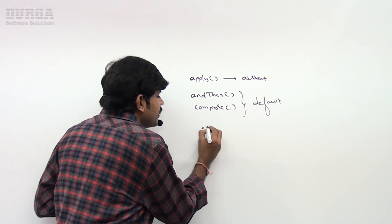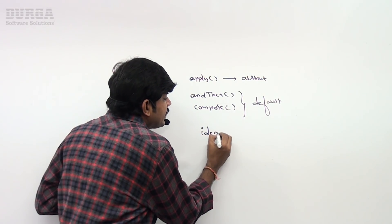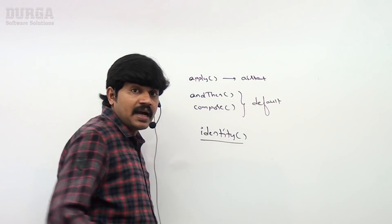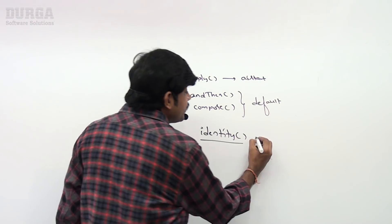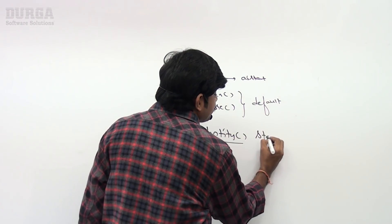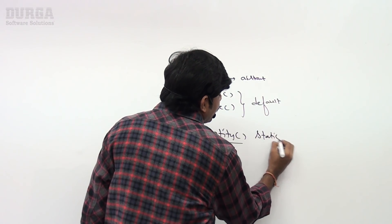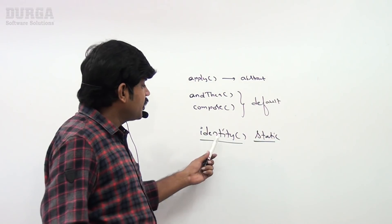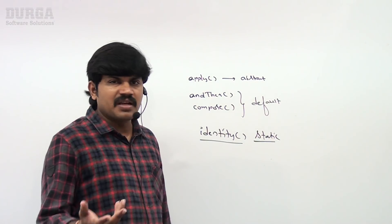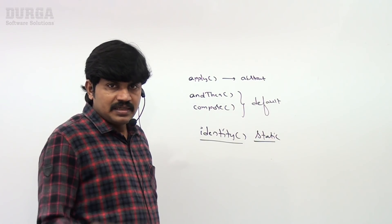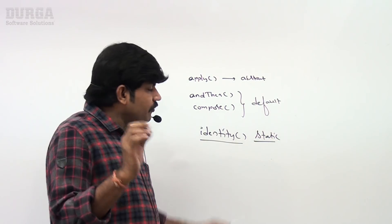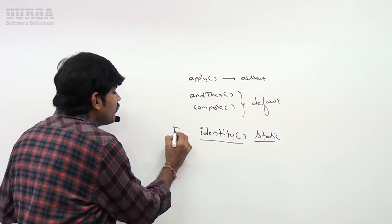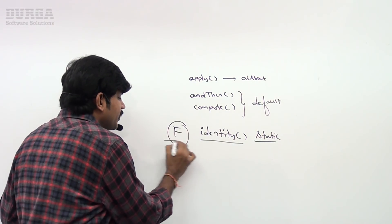There is one more method: identity. This is a static method. Are you getting what this static method is going to do? It does nothing on its own — it will return a function.